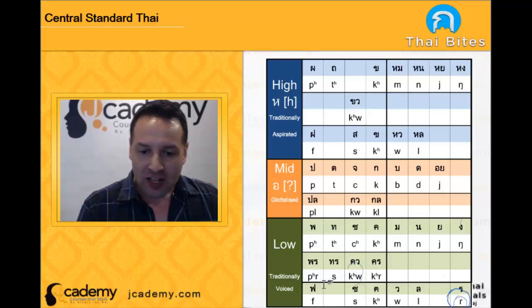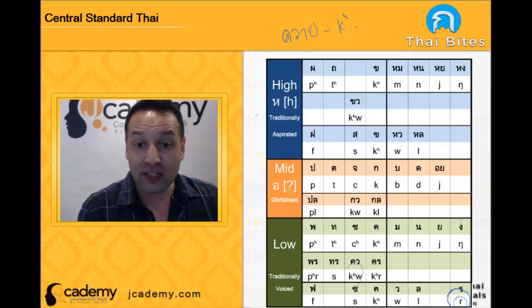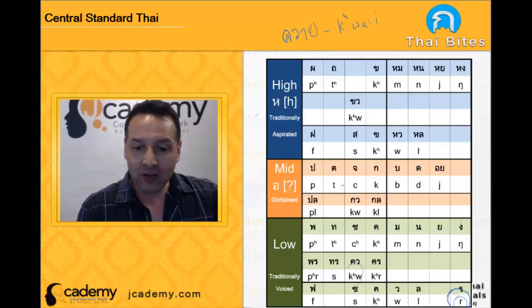Now actually, if we have a look here at the central standard Thai, there are some other sounds here. For example, the word kwai, if I say kwai like buffalo, you can see it's spelt with this kawo, I'll write it up here. Kwai, kawo, ayo, kwai means buffalo. It's pronounced kuh in IPA, aspirated kuh and then a wah, ah, ee, kwai. Now, what happens in real Bangkok Thai?